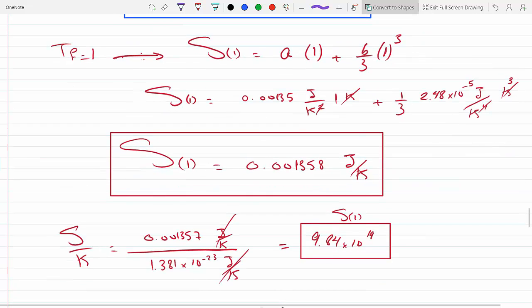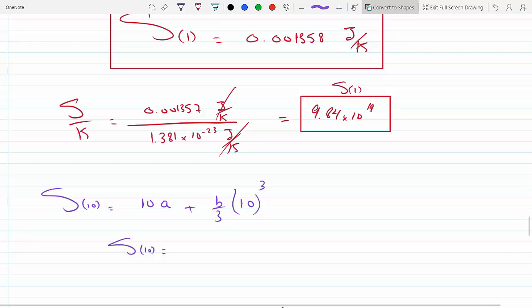If we do that, we get 0.0177 joules per kelvin.